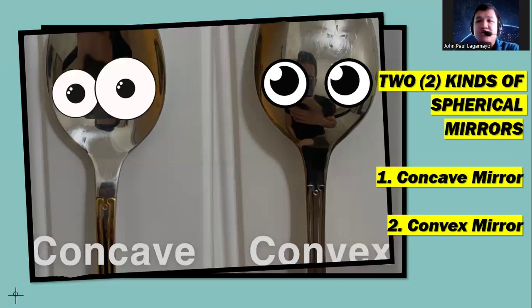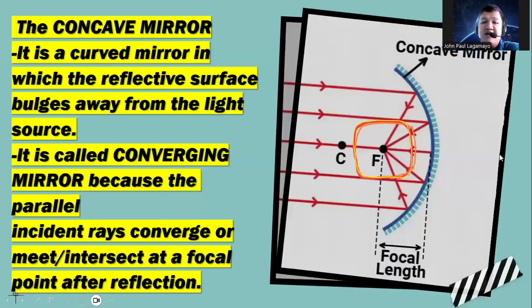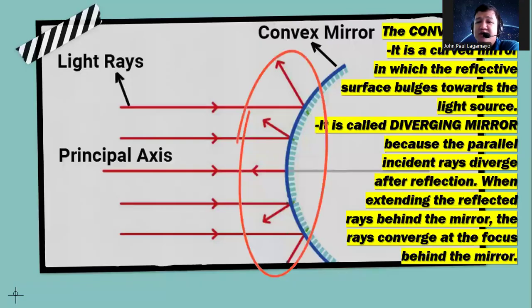The concave mirror is a curved mirror in which the reflected surface bulges towards the light source. It is called as the converging mirror because the rays intersect at the focal point after reflection. So that's what happens—concave mirror is converging in nature. While the convex mirror is diverging because the parallel incident rays diverge after reflection. When extending the reflected rays behind the mirror, the rays converge at the focus behind the mirror.